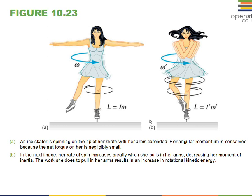Ice skaters — by redistributing the mass of the body and bringing it in closer to the axis — decrease the value of I. If friction can be ignored, the net external torque is zero, and I omega will equal I-prime omega-prime. If I-prime gets smaller, omega-prime has to get bigger to keep L constant. That's conservation of angular momentum.